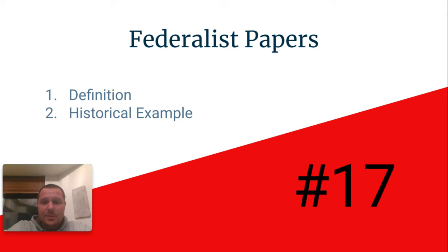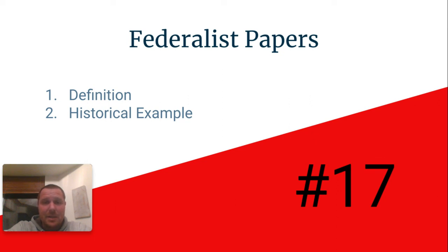In these papers, Hamilton, Madison, and Jay argued for things like why it was necessary to have a stronger national government. They also argued for the separation of powers that existed in the Constitution as a means of making sure that not any one branch or any one individual would become too powerful. Federalist Papers.